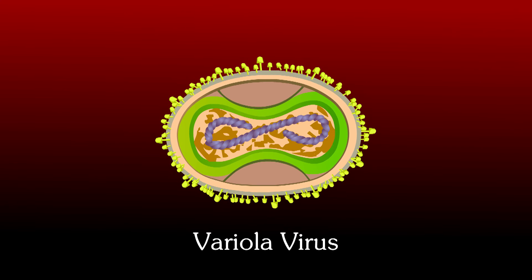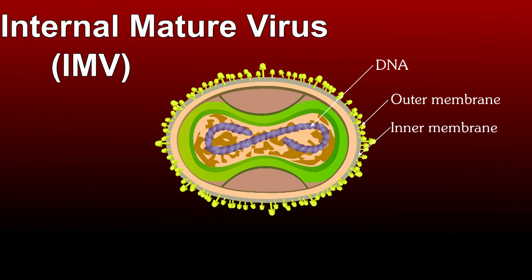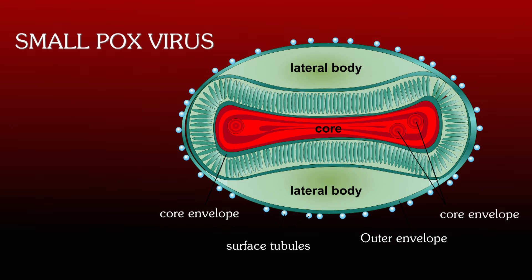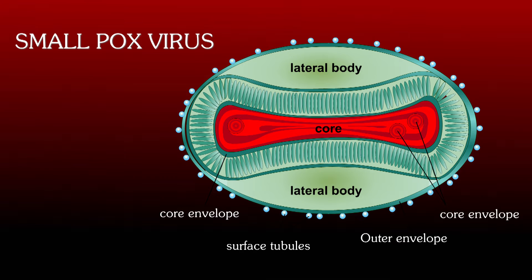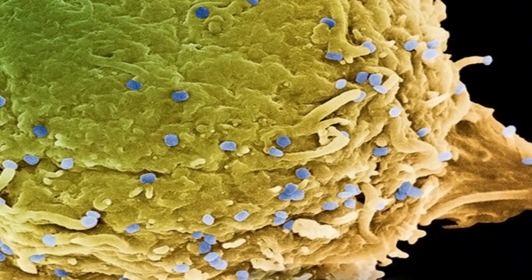Variola virus is called the smallpox virus. It is transmitted by droplet infection, either directly from the infected person or by handling articles infected by the patient. Smallpox is completely eradicated. The smallpox vaccine consists of vaccinia, closely related to variola.